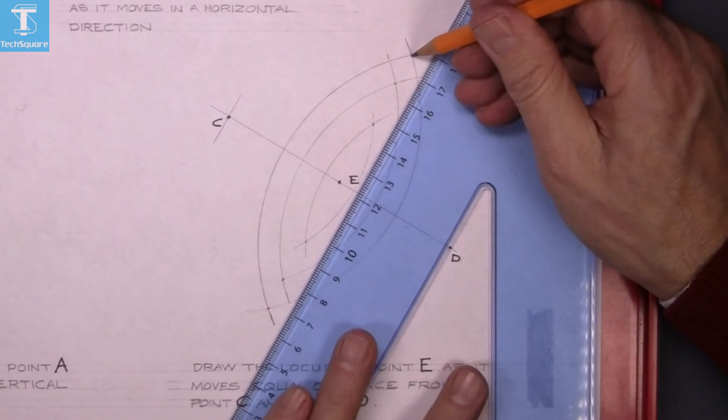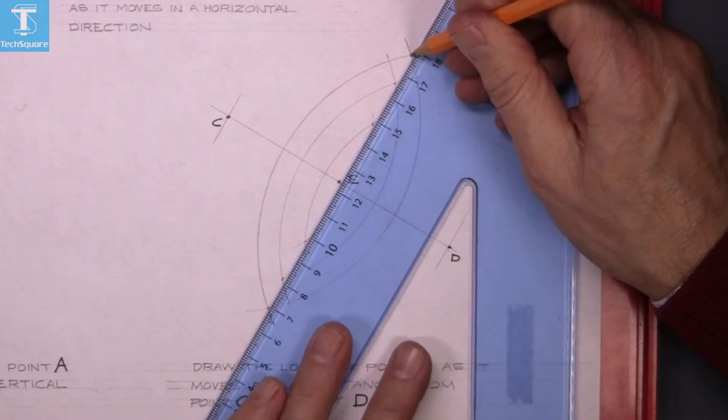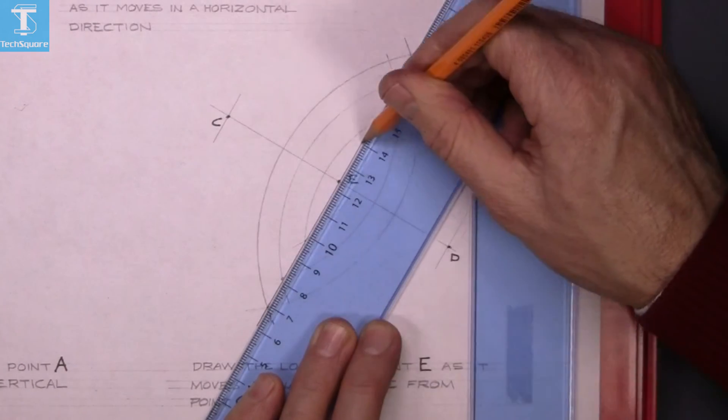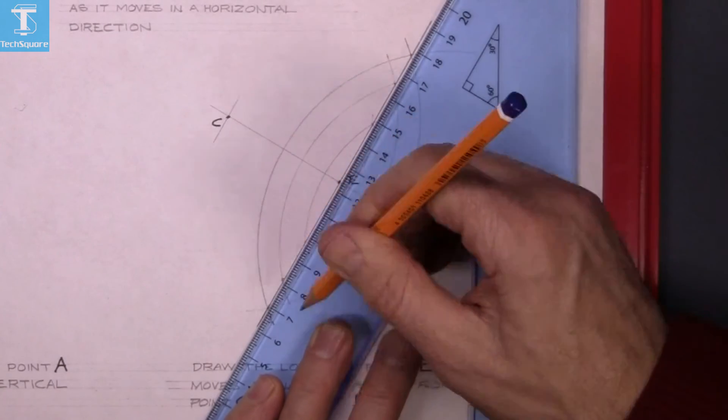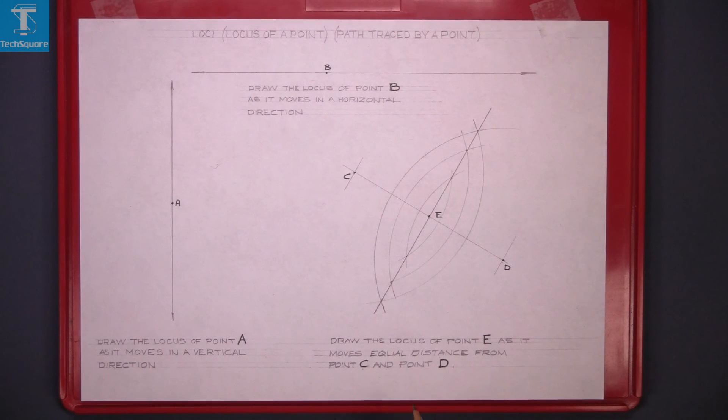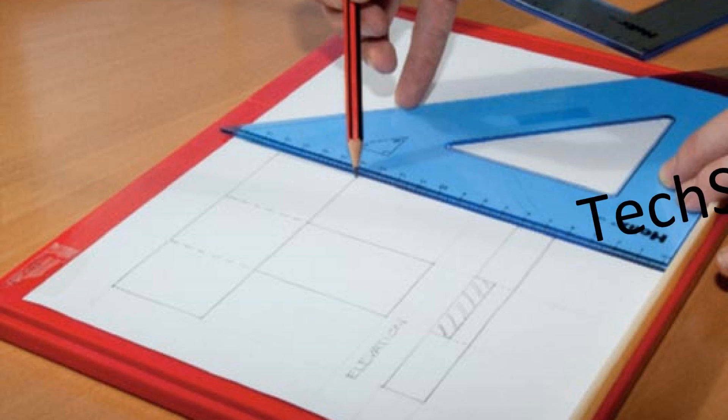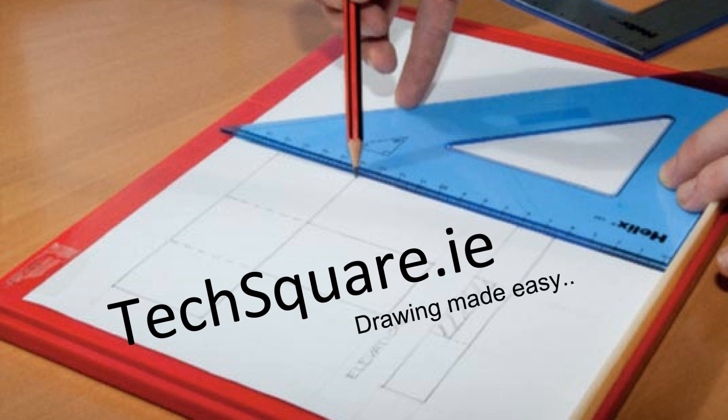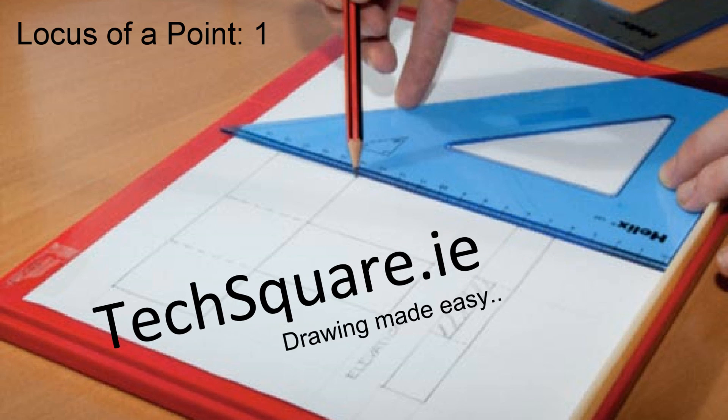Now we'll join up the points to get the path that was traced by point E. And that's it complete. So E stays equal distance from C and D. And that's your first lesson on loci complete.